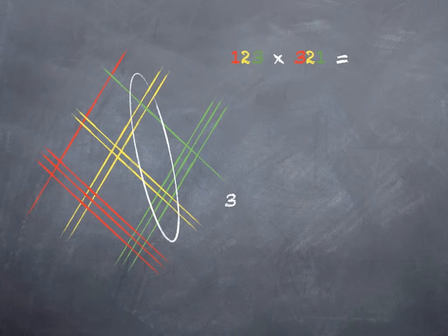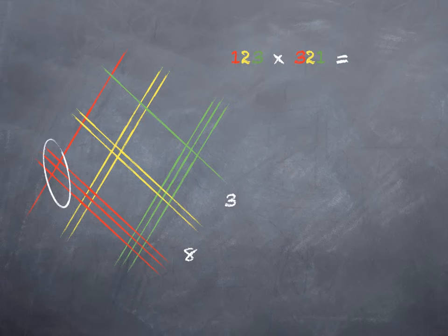Next up, I have yellow intersecting green, which means I'm getting tens and ones. So out of that, I'm going to get tens. If I count up those intersections, there are eight. So eight goes in the tens place. On the left, I get three intersections. But that's hundreds and hundreds, which gives me ten thousands. So three goes in the ten thousands place.